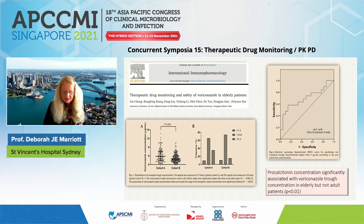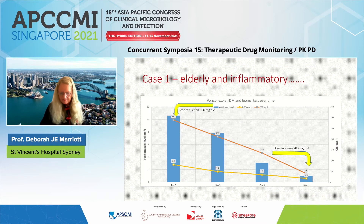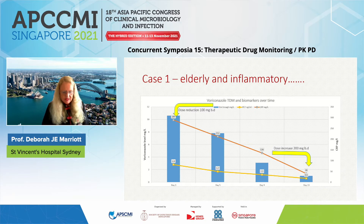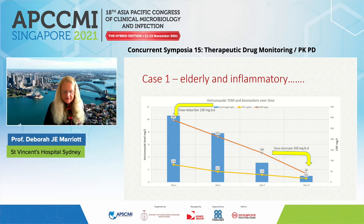Given the association with inflammation, procalcitonin concentration was significantly associated with the voriconazole trough concentration in elderly but not in adult patients — another signal that inflammation is very important. Returning to our patient, who was both elderly and inflamed: his initial trough was 10.8 when CRP and procalcitonin were both significantly elevated. The dose was reduced, but as CRP and procalcitonin fell, his voriconazole concentration verged on subtherapeutic and was increased again. Without TDM, we may have had trouble with both toxicity and inadequate efficacy in this patient.